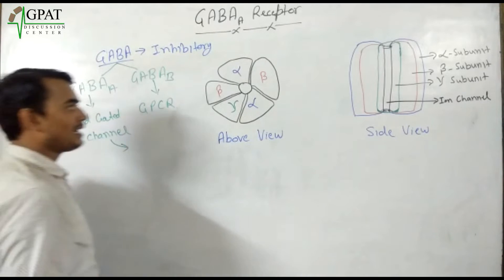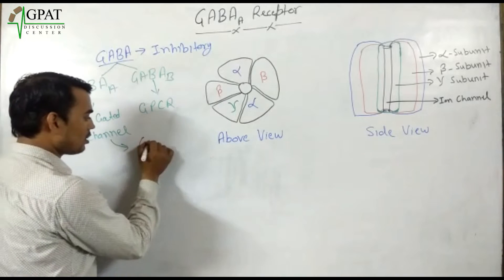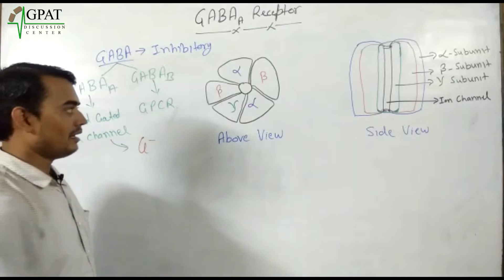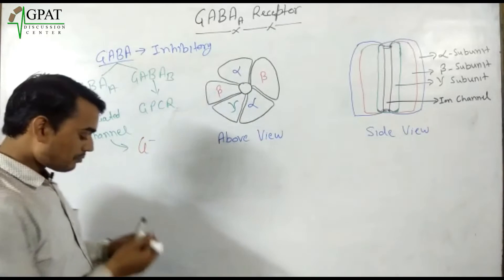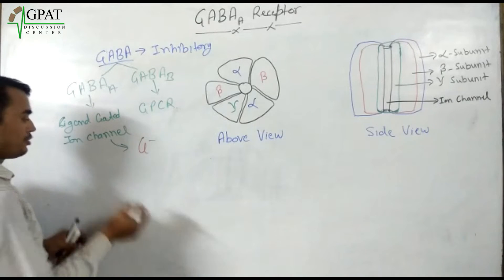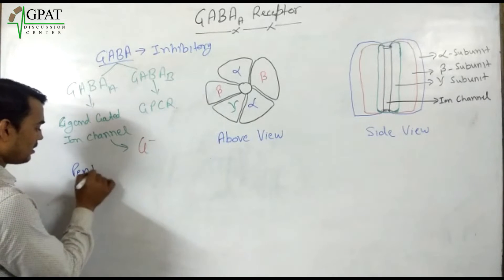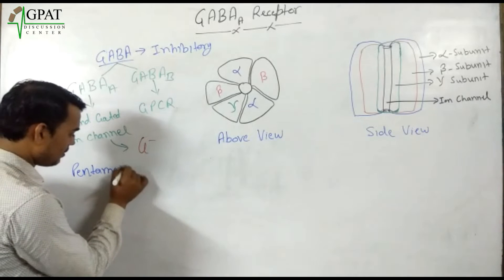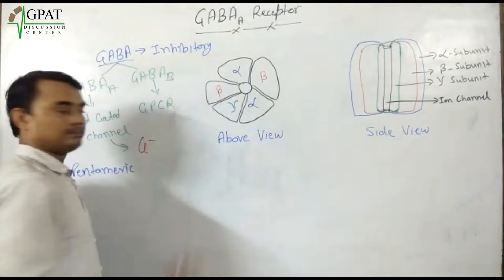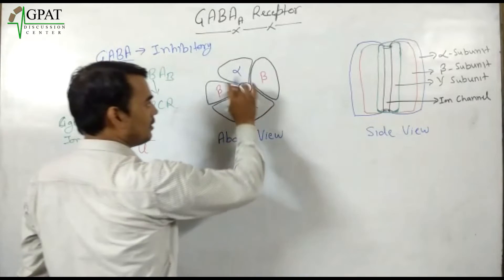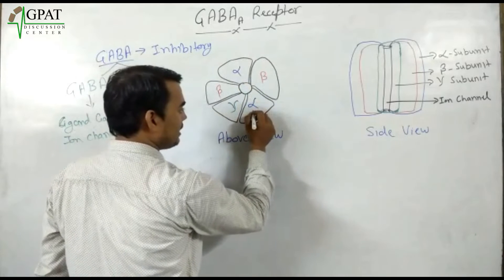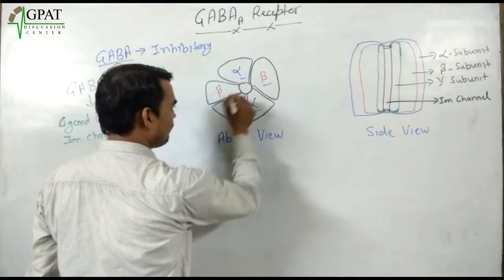GABA-A is a ligand-gated ion channel, and the ion responsible for the action of GABA via the GABA-A receptor is mainly the chloride ion. GABA-A receptor is pentameric in nature — pentameric means it has five subunits: alpha, beta, alpha, beta, gamma.